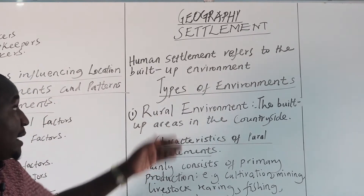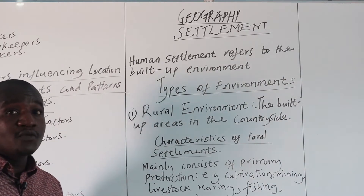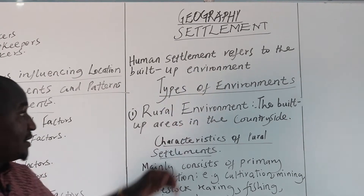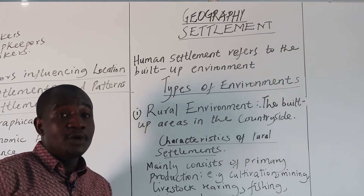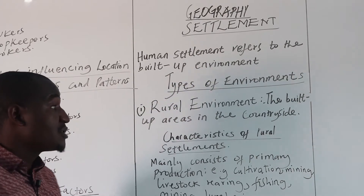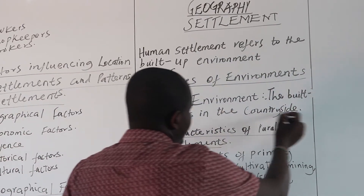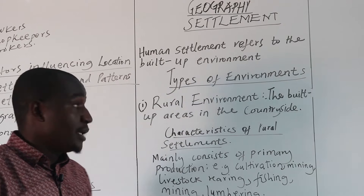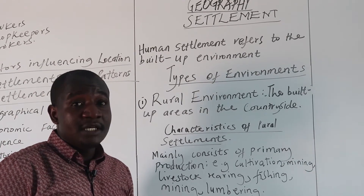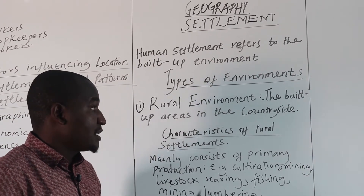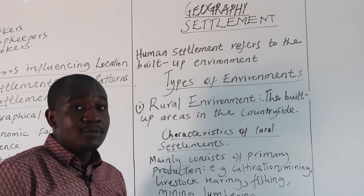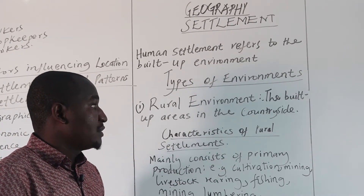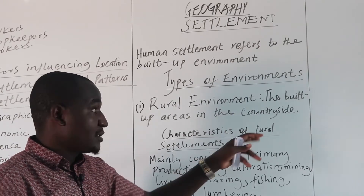Under types of settlements, we have two types. People live in different areas. One, they live in the rural areas. These are the built-up environment in the countryside — we call them the village areas or the village sectors where people live. Most probably, they are the farmsteads. We can even talk about agricultural farms and all that.